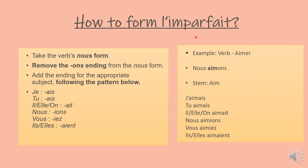How to form l'imparfait? To form imparfait, we have to take the verb's nous form and then remove the -ons ending. For example, let's take the verb aimer, which means to like. With nous it's nous aimons, so we'll take the stem which is aim- and remove the -ons ending. So once we remove -ons, we get aim- which is the stem, and we'll simply add the endings.